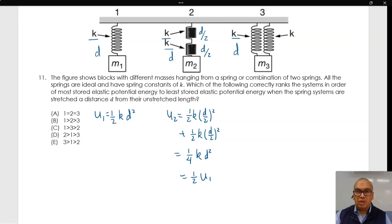Finally, in the third case, each spring is stretched a distance k d. So you have an elastic potential energy equal to twice the product one half k d squared.